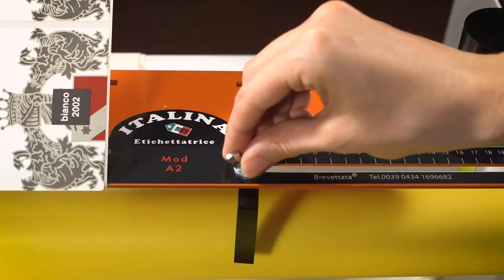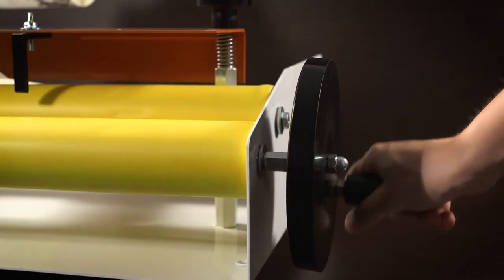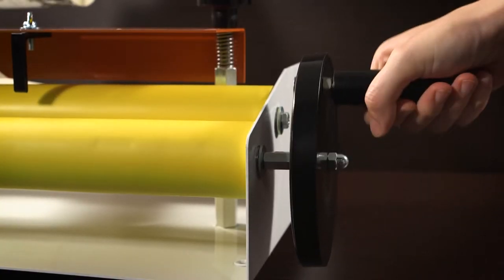Place the delimiter to secure the height of the label. Turn the hand wheel to proceed with the labeling.